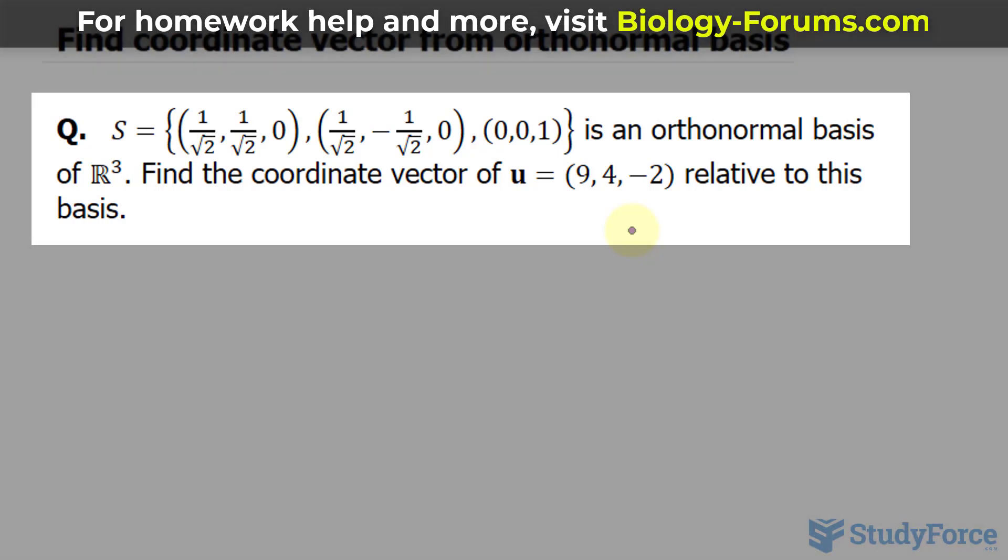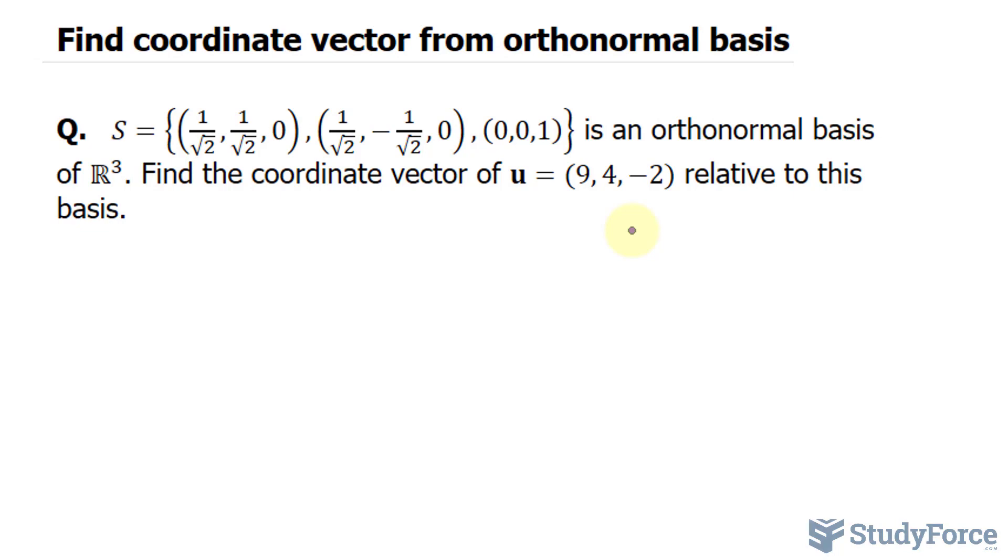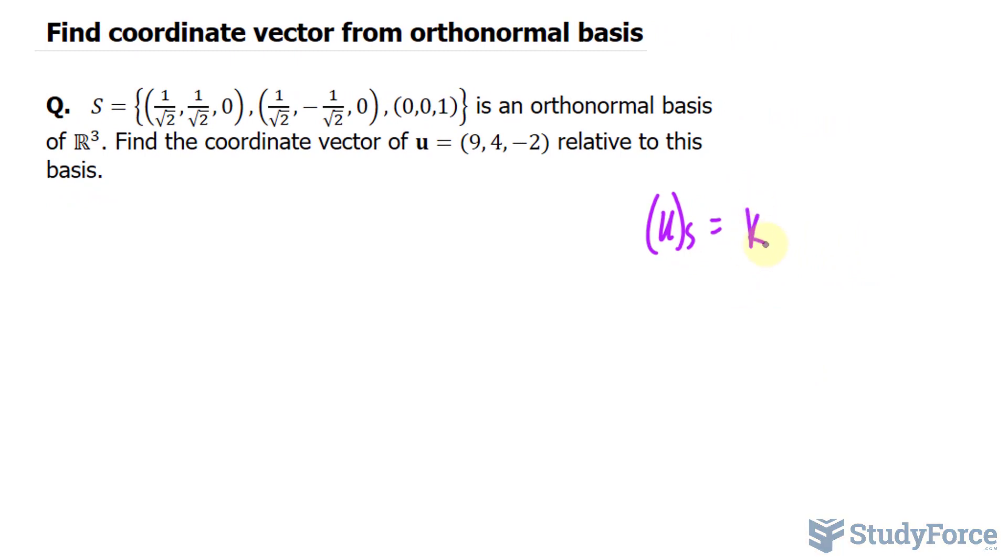It's important to mention that before we start, we have done this in the past, but using a different method. In the past, we set it up where we said that the coordinate vector u relative to S is equal to a constant k₁ times the first vector in the set plus a second constant k₂ multiplied to that plus k₃ multiplied to that.